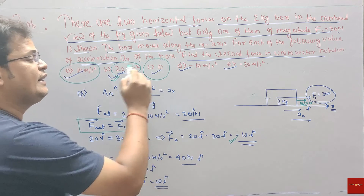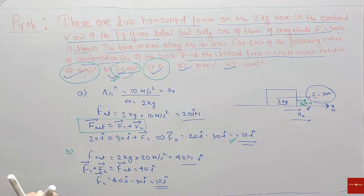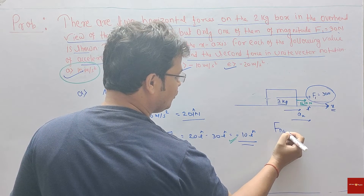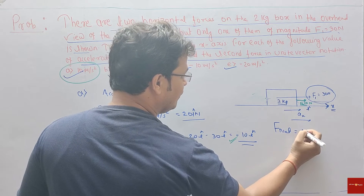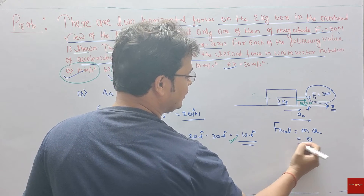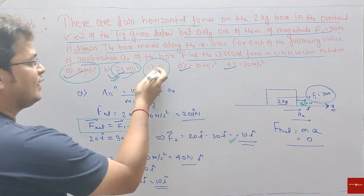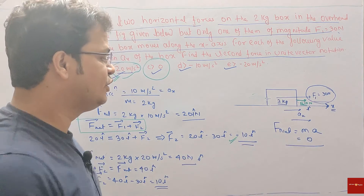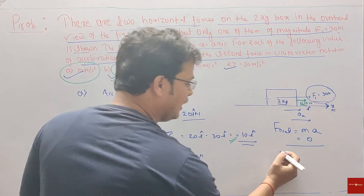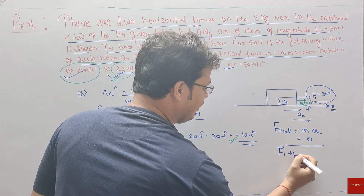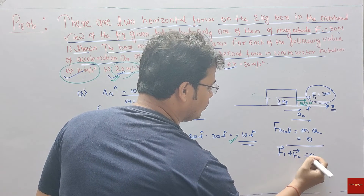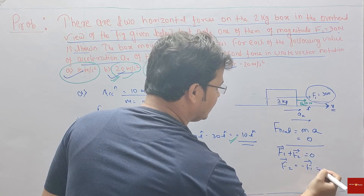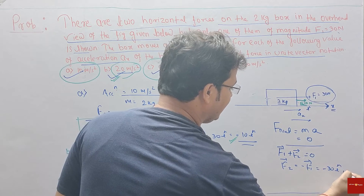When net acceleration is zero, F-net equals mass into acceleration, and since acceleration is zero, F-net is also zero. This means F1 plus F2 equals zero, so the unknown force F2 equals minus F1, which is minus 30 i-cap Newton.